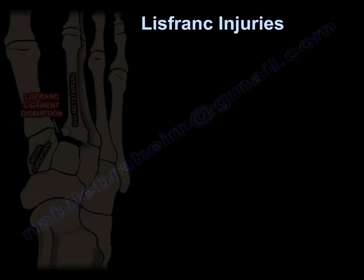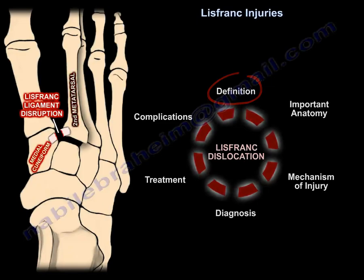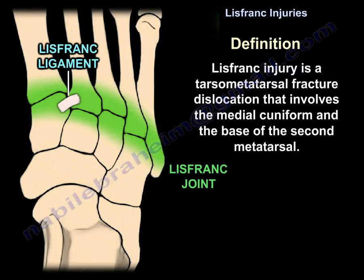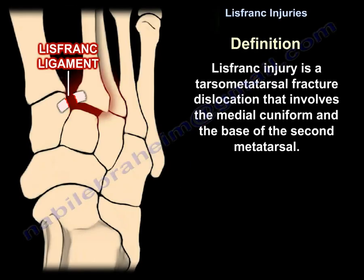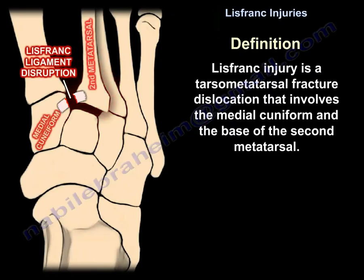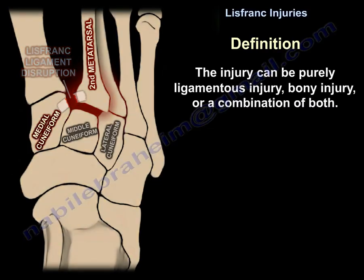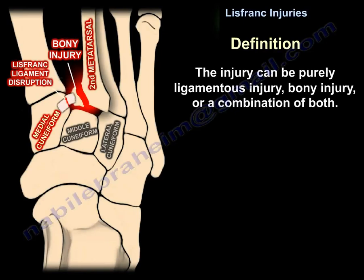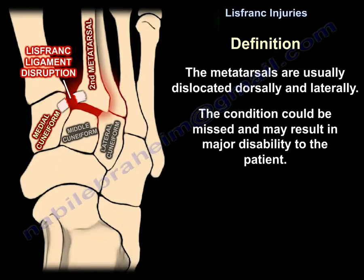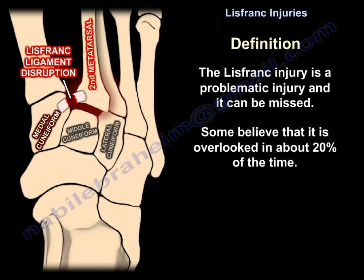Lisfranc injuries. A Lisfranc injury is a tarsometatarsal fracture dislocation that involves the medial cuneiform and the base of the second metatarsal. The injury can be purely ligamentous, bony, or a combination. The metatarsals are usually dislocated dorsally and laterally. The condition can be missed and can result in major disability. It is overlooked in about 20% of cases.